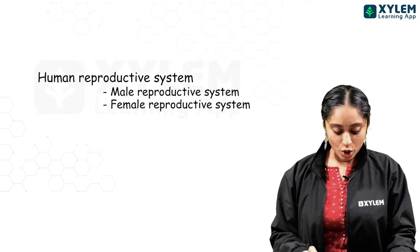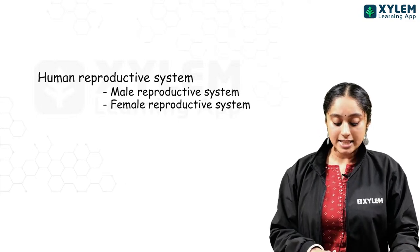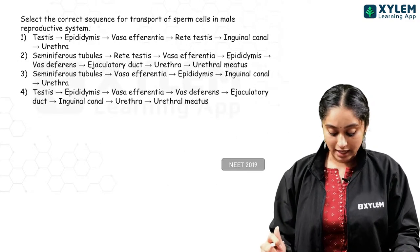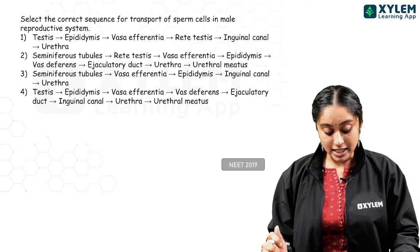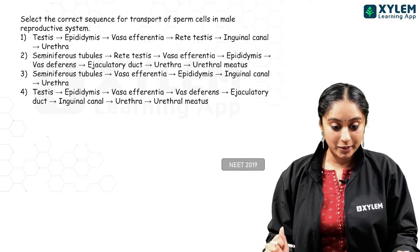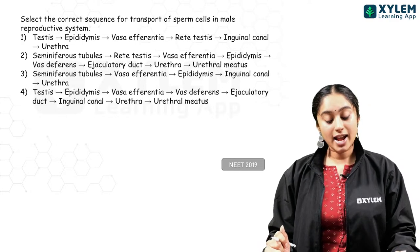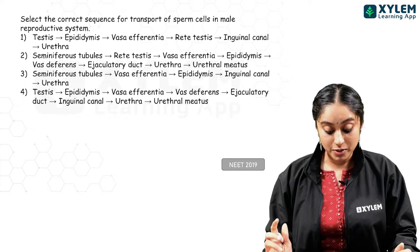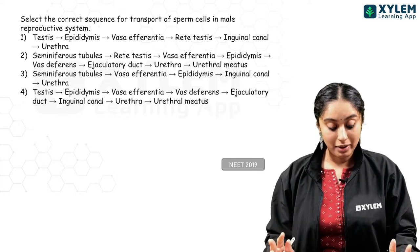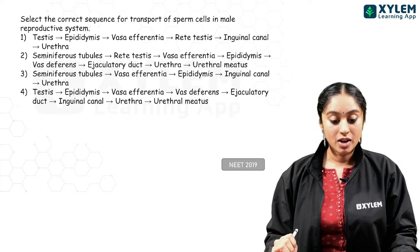Human reproductive system parts — NEET 2019. Select the correct sequence for transport of sperm cells in the male reproductive system.